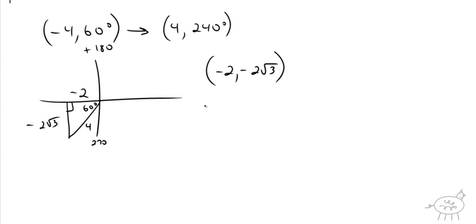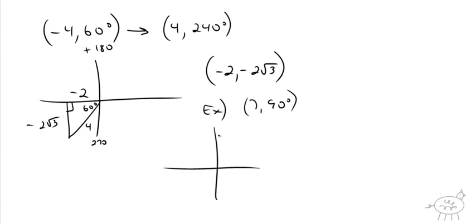How about 7 comma 90 degrees? Math fans, there's no triangle to be drawn — we're right up here on the axis. So if there's no triangle and the distance is 7 straight up, what's the rectangular coordinate? The x value is 0 because x is left and right, and y is 7. The answer is 0 comma 7.